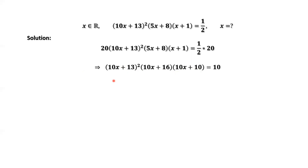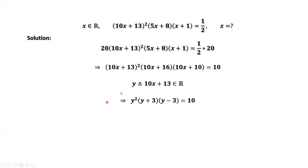We define the first number as y. Because x is a real number, this implies y is also a real number. The second number is y + 3, and the third number is y − 3. So (y + 3)(y − 3) equals y² − 9.